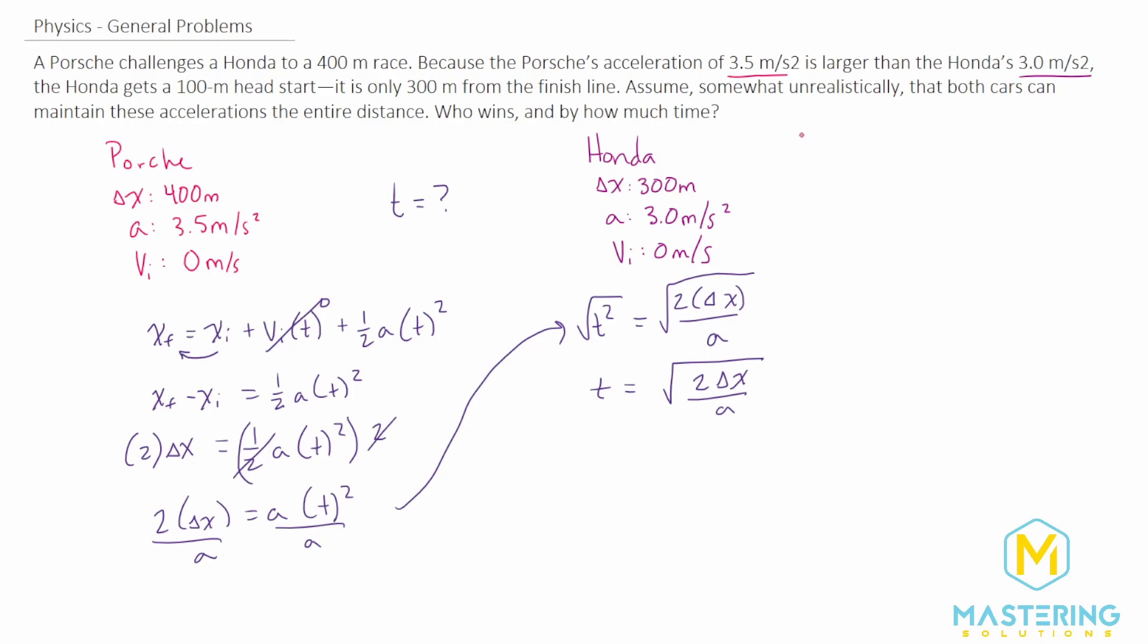So for the Porsche, we have t equals the square root of 2 times delta x for the Porsche is 400 meters for the entire race. And we'll divide that by its acceleration of 3.5 meters per second squared.